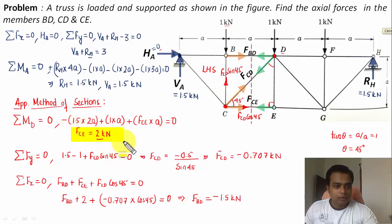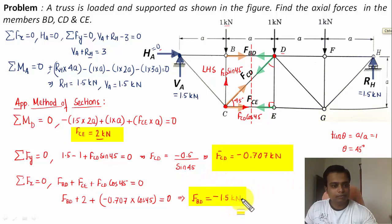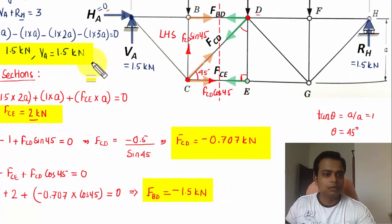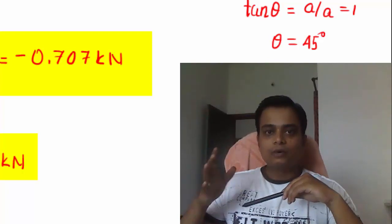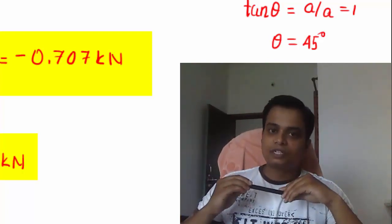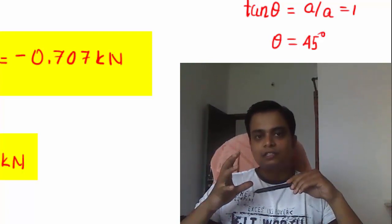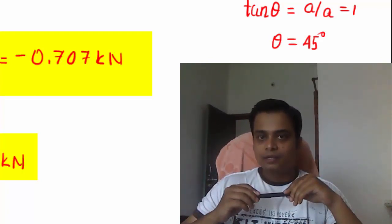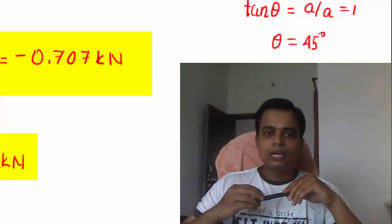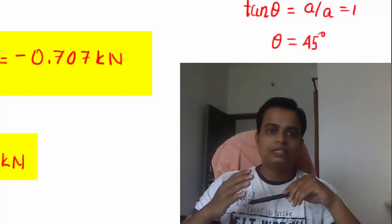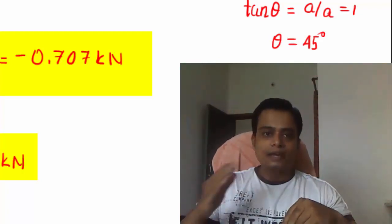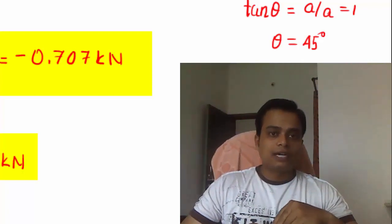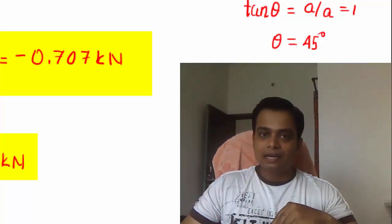Let us highlight the final answers: F_CE = 2 kN (tension), F_CD = −0.707 kN (compression), F_BD = −1.5 kN (compression), along with the reactions VA = 1.5 kN, HA = 0, RH = 1.5 kN. If you have any doubts write them in the comments. Share, like, and subscribe — this is Manas Patnaik signing off. Take care, have a great day, and keep learning.